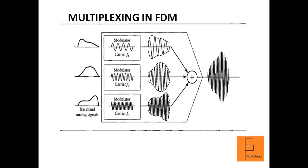Multiplexing is carried out at the sender side and demultiplexing at the receiver side. In FDM, there are three baseband signals — baseband signal 1, 2, and 3. A baseband analog signal is the original signal which has not been modulated. Any signal that is original in frequency and has not undergone any modulation is called a baseband signal. Each baseband signal is given to a modulator, and each modulator has a carrier frequency — F1, F2, and F3 respectively.